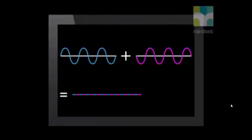At other places, crests meet troughs and the water just flattens out at those places. In other words, the wave amplitude is zero. We say they interfere destructively and we get a zero amplitude.